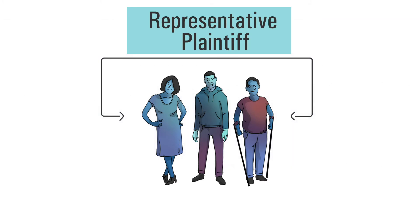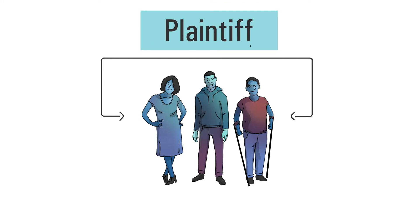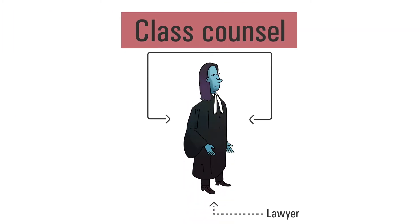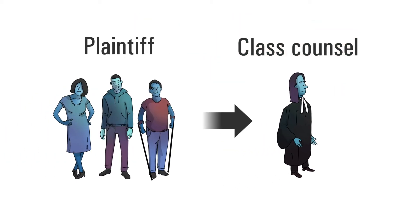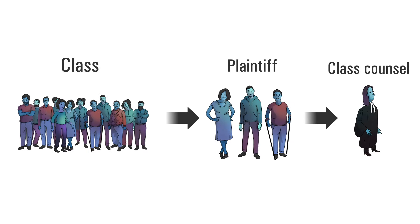A representative plaintiff is the person who is named as the plaintiff in the lawsuit. The lawyer who represents the class is called class counsel. The representative plaintiff advises class counsel and must fairly and adequately represent the interests of the class throughout the case.